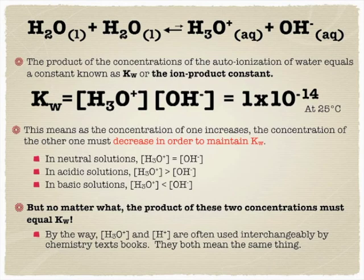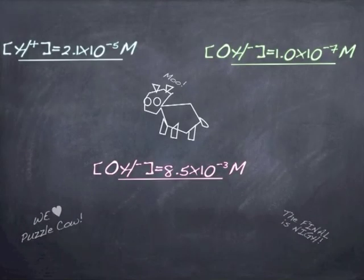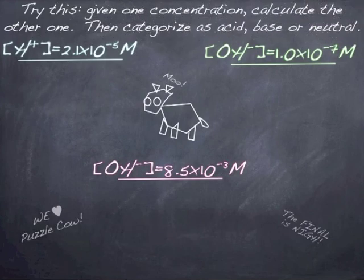By the way, you will see hydronium and H+ use interchangeably depending on the author of a textbook. I tend to jump back and forth depending on space. For instance, when we talk about molarity, we should really say moles per liter, but for the sake of space I use the capital M. So given one, we should be able to find the other and then classify it as an acid or base.